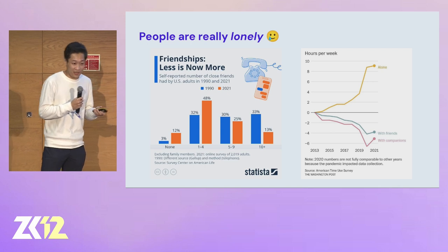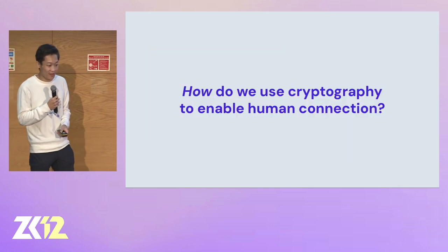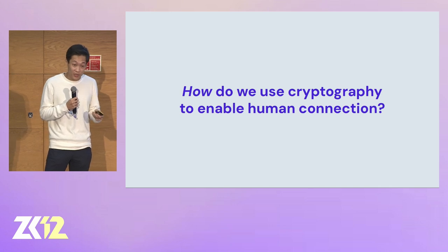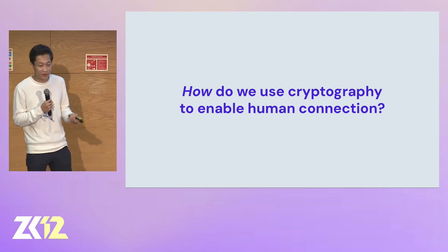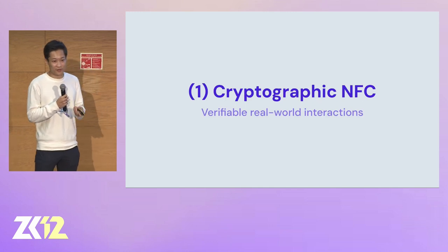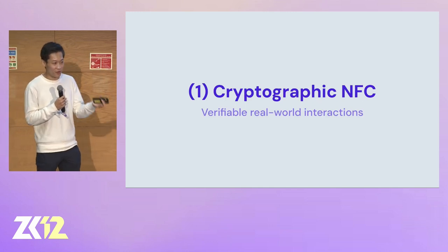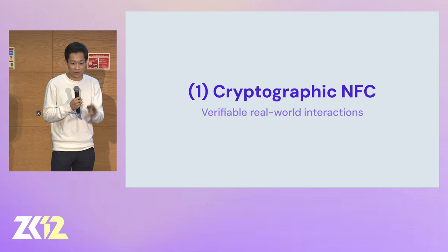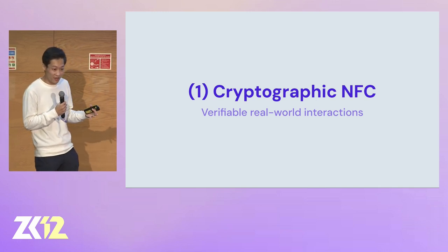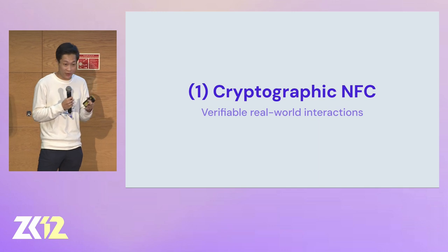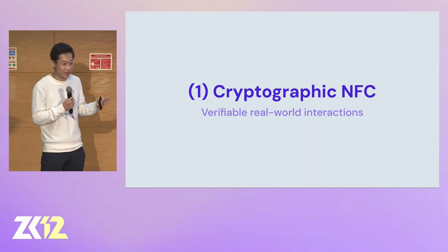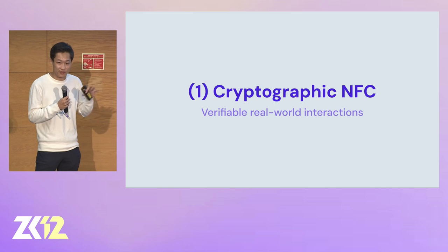So what can we do about this? What tools do we have access to? Specifically, how can we use cryptography to help enable human connection? The first tool is cryptographic NFC cards. All of you are experiencing this right now — you all have these NFC badges as you entered the event. NFC is really great for one useful primitive: verifiably digitizing physical interactions. I can prove to you that I actually met you in person by collecting a tap from your NFC card.